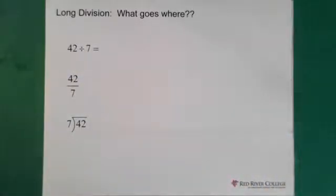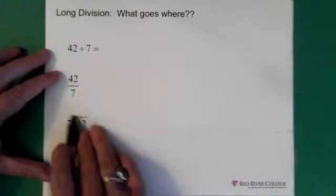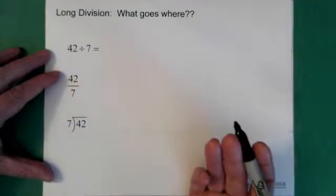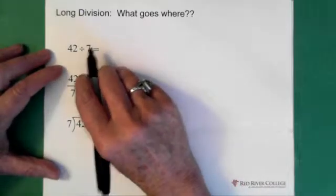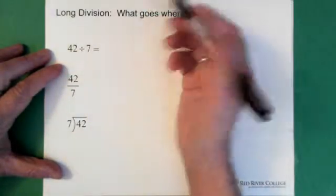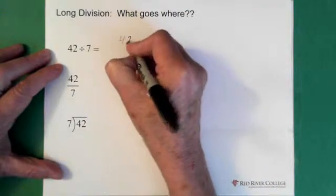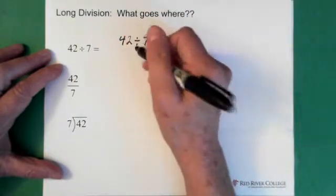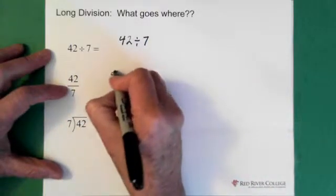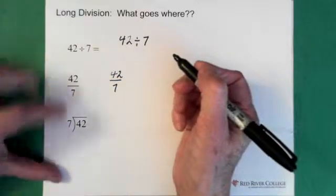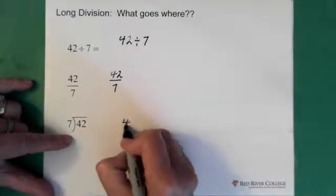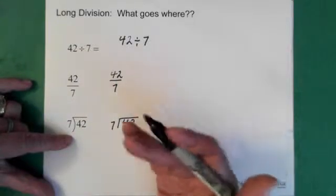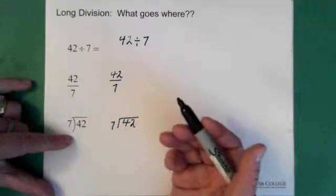A lot of times when I'm working with students on long division, they can't remember how to set this up. The way that I remember it is by using words. There's nothing wrong with just taking the time to walk through it and use words. Whenever I'm writing this out, I write it out by using the words. I say forty-two divided by seven. When I do this, same thing: forty-two divided by seven. That's how I remember, and you may have a method that works really well for you.